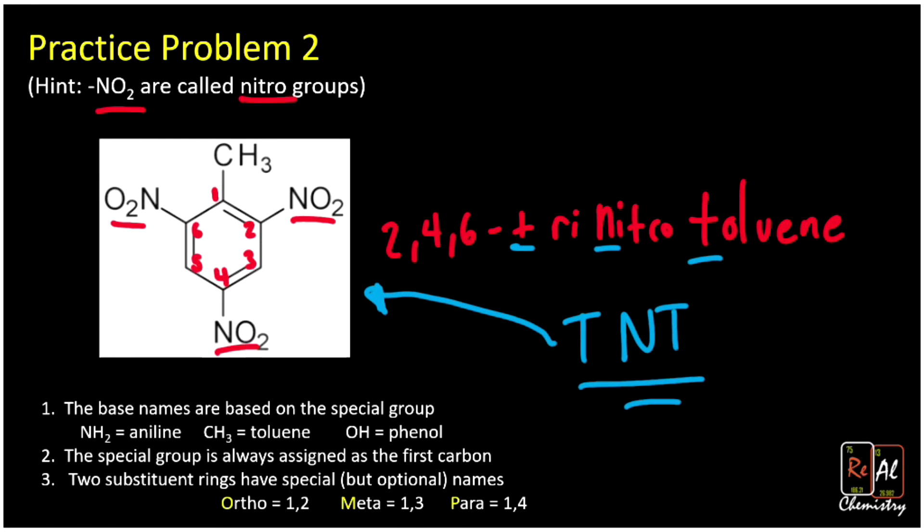You can see why people call it TNT instead of 2,4,6-trinitro toluene - TNT is a little more brief. This guy's really explosive because it turns out these nitro groups contain tons of energy. If you go ahead and combust this guy, it decomposes and releases all of its energy - releases enormous amounts of energy. So these nitro groups are the secret to the explosive nature of our TNT dynamite.